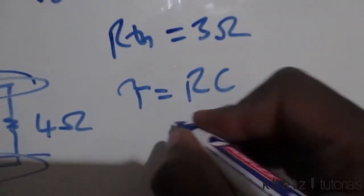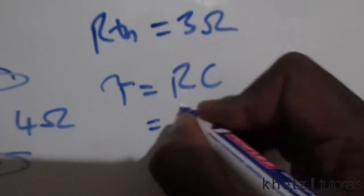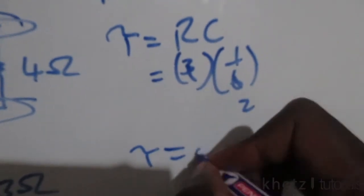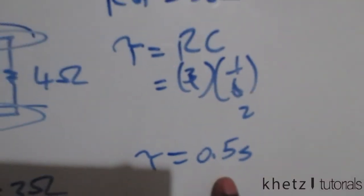Therefore we can proceed to find our RC, which is our time constant. Our R is 3 and the value of our capacitor is 1 over 6, therefore we're going to have 0.5. This means our time constant is 0.5 seconds.